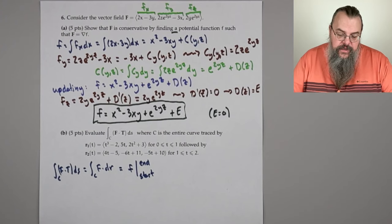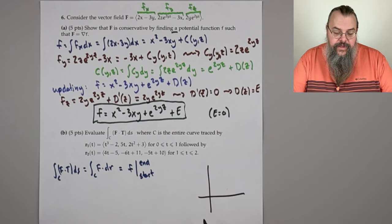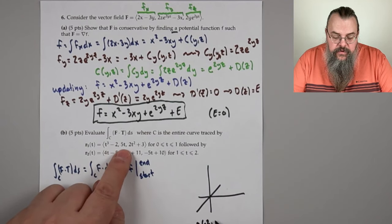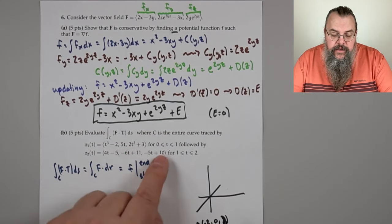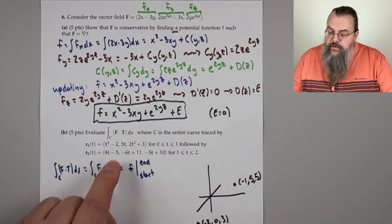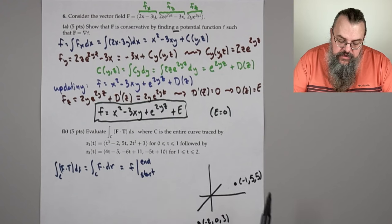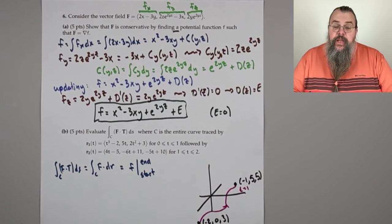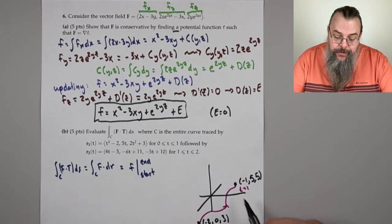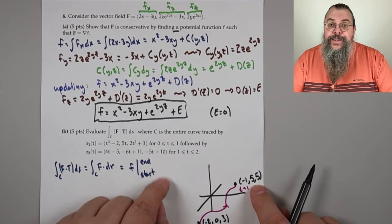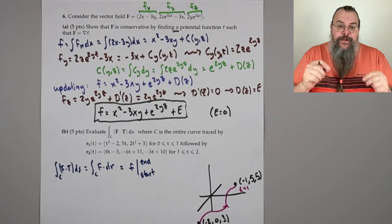The curve r₁ starts at t = 0 at point (−2, 0, 3), and at t = 1 we're at (−1, 5, 5). Then r₂ continues: at t = 2 we're at (3, −1, 0). Since F is conservative, it doesn't matter that there's a kink — the point in the middle cancels. Our start is (−2, 0, 3) and our end is (3, −1, 0).